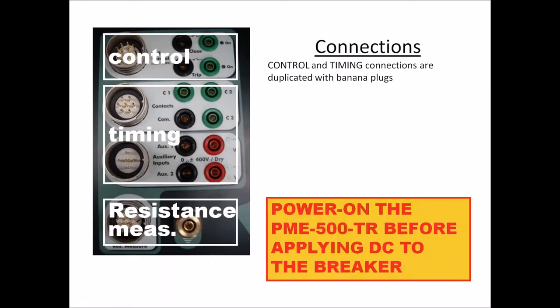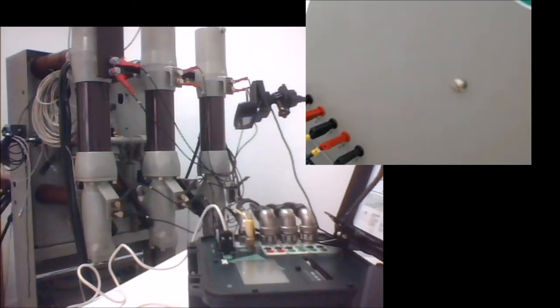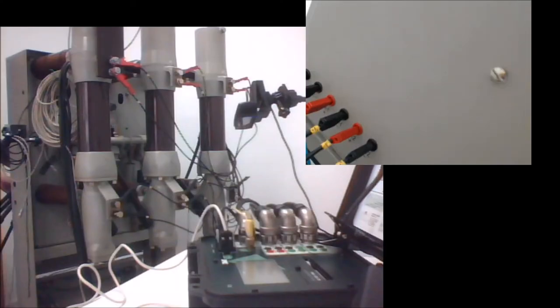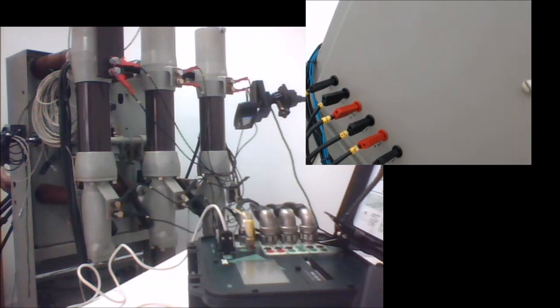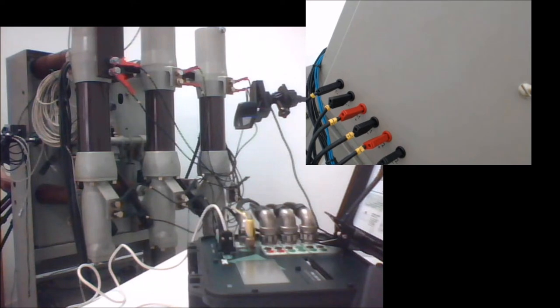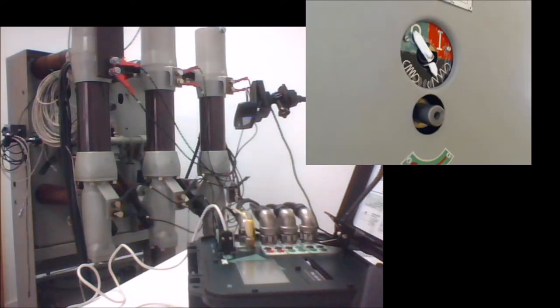The control multi-connector here is connected to the operation coils in the breaker. You can see a group of connections, two of which correspond to the close and open coils in the breaker. Now I will start showing you the basic operation — how we set up the test and prepare the instrument to perform the test we want to do.